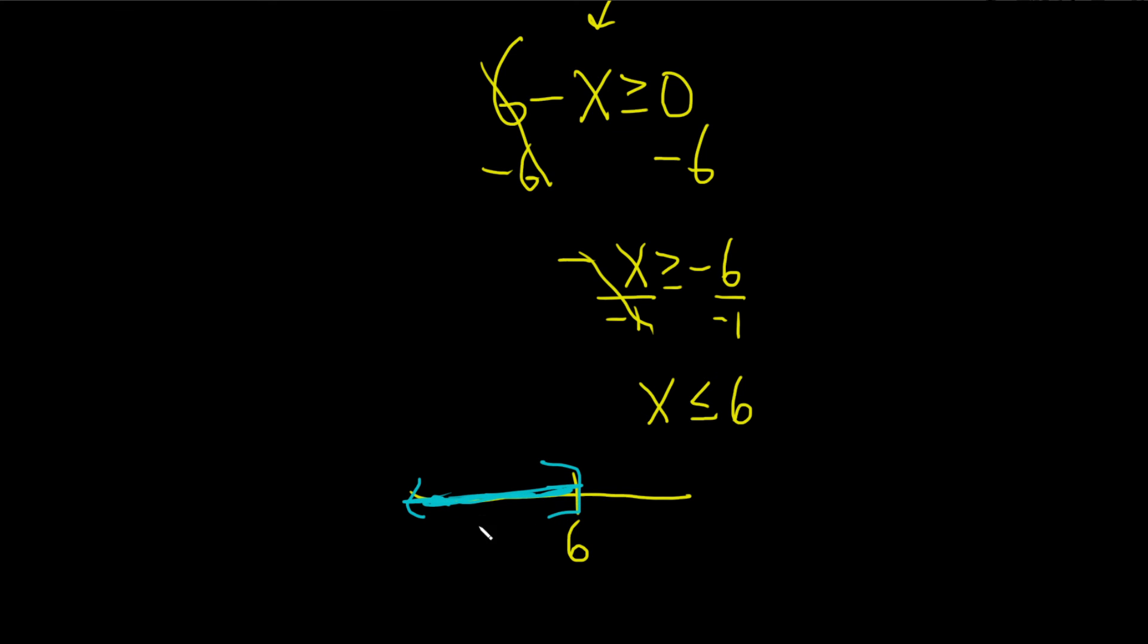So in interval notation, it would be negative infinity with the parentheses all the way to six. And then you put a bracket on it. And that would be the domain of this function.